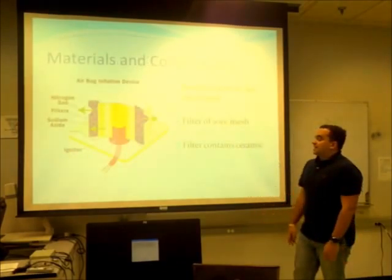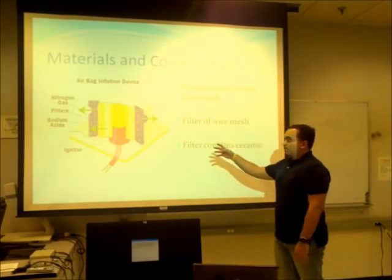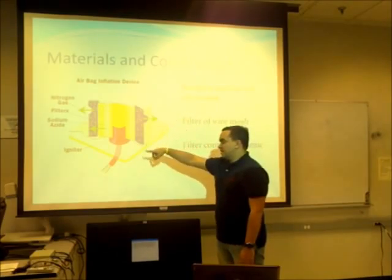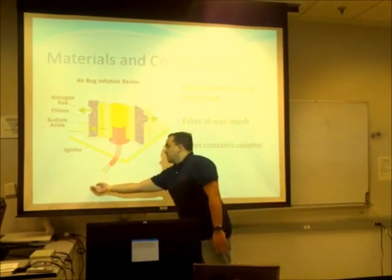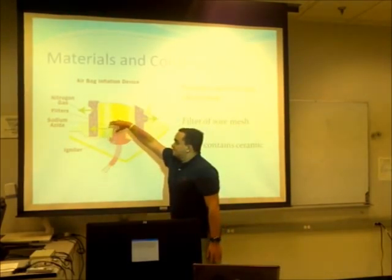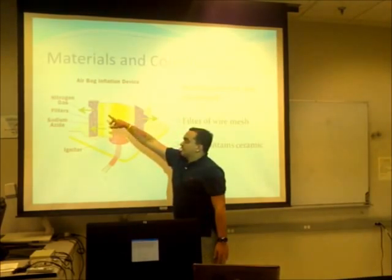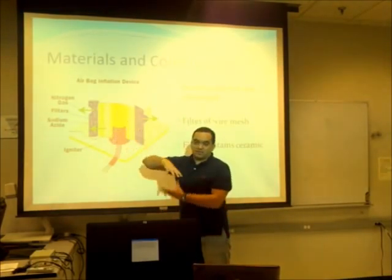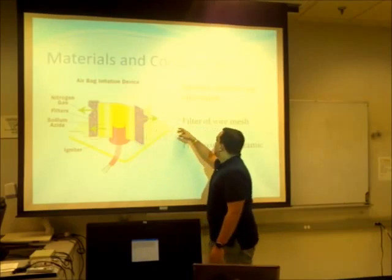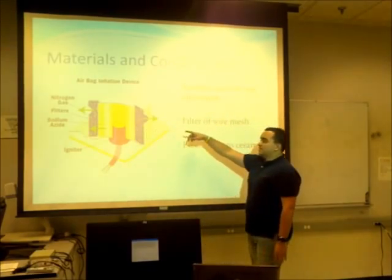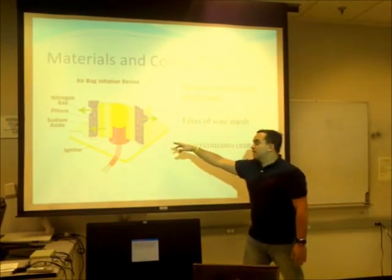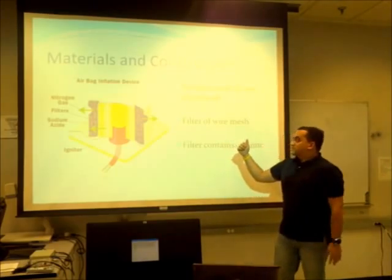Materials of construction: the airbag system is composed of a crash sensor that sends a signal to the module, which then creates a chemical reaction that produces nitrogen gas at a hot temperature to deploy the airbag. This system has filters made of a wire mesh of stainless steel or similar material, and in some cases there are filters with a ceramic component.